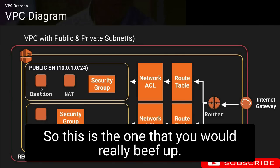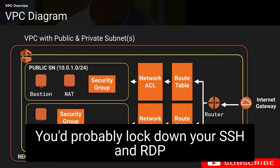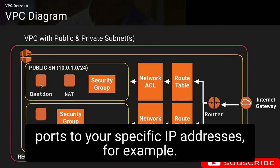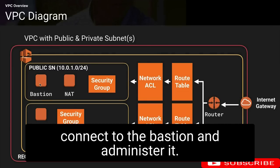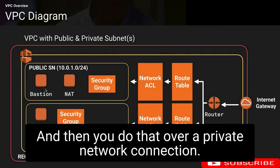This is the one you would really beef up — you would lock down your SSH and RDP ports to your specific IP addresses, for example. That way only you can connect to the bastion and administer it, and then you do that over a private network connection.